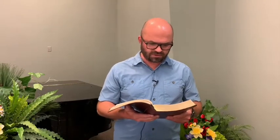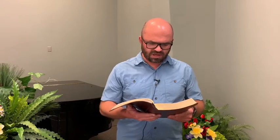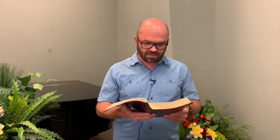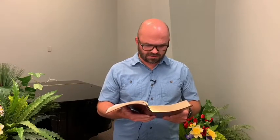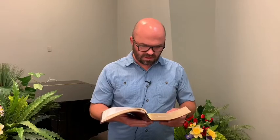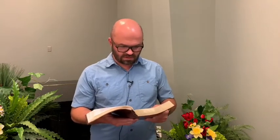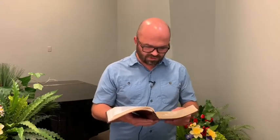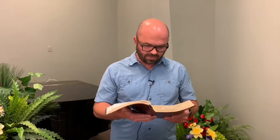Now a great herd of pigs was feeding there on the hillside, and they begged him, saying, Send us to the pigs, let us enter them. So Jesus gave them permission. And the unclean spirits came out and entered the pigs, and the herd, numbering about two thousand, rushed down the steep bank into the sea and drowned in the sea. What a sight. The herdsmen fled and told it to the city and in the country. And the people came to see what had happened. And they came to Jesus and saw the demon-possessed man, one who had the legion, sitting, clothed, and in his right mind. And they were afraid. And those who had seen it described it to them, what had happened to the demon-possessed man and to the pigs. And they began to beg Jesus to depart from their region.